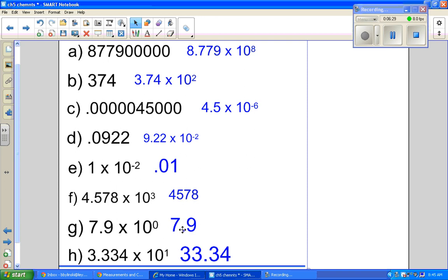7.9. Why does it stay at 7.9? Because 10 to the 0 is 1. It is not 0. So any time you see times 10 to the 0, the number will not change. And then finally here, if it says 10 to the 1, you really just move it one place. So don't think too much. 3.3 moved over because it's positive 1 to the right makes it 33.4.